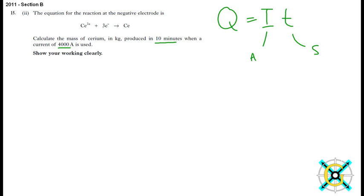The first thing we need to do then is to work out the coulombs. Q equals 4000 times 10 minutes times 60. So 60 seconds in a minute, and that's 10 minutes. So that's 600 seconds.